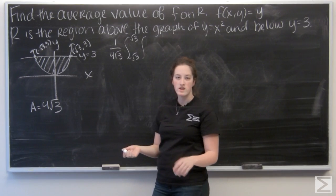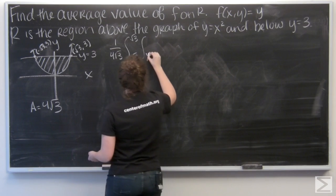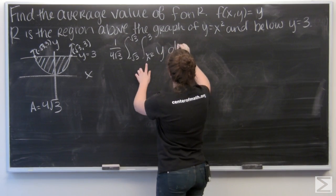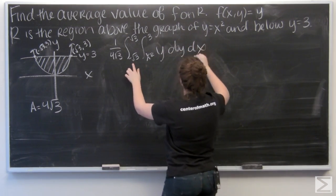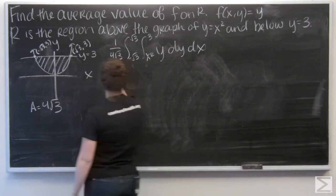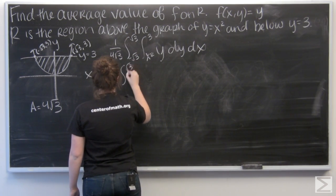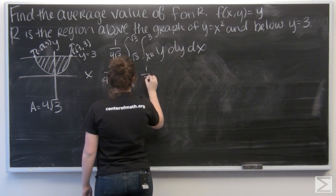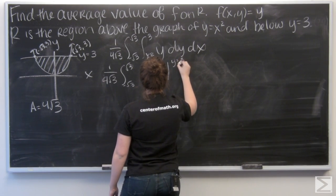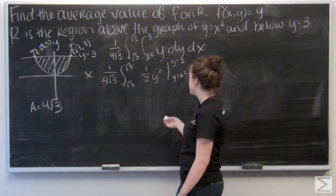So for y, I'm going to integrate from x squared to 3. And then my function is just y. I have dy dx. So if I integrate y with respect to y, I'm going to get 1 half y squared. And I'm evaluating from y equals 3 to y equals x squared. Other way. x squared to 3.